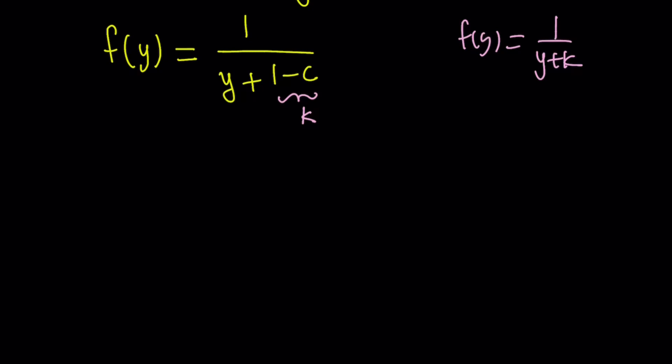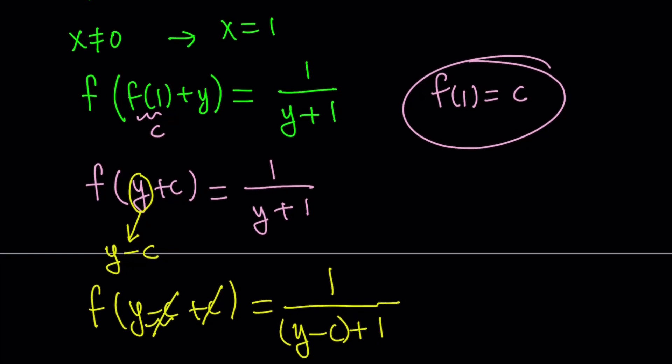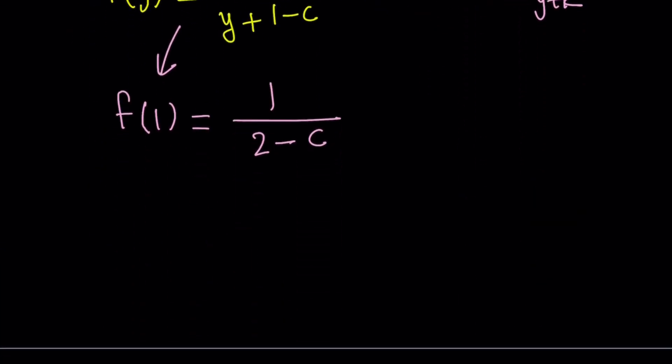So let's try to find f of 1 from here. Since we have an expression for f of y, so let's replace y with 1 on both sides. That's going to give us f of 1 equals 1 over 1 plus 1 minus c, which we can write as 1 over 2 minus c. But here's the thing. We do know that f of 1 can be written as 1 over 2 minus c. But at the same time, f of 1 is actually equal to c. So we can just set this equal to c, right?